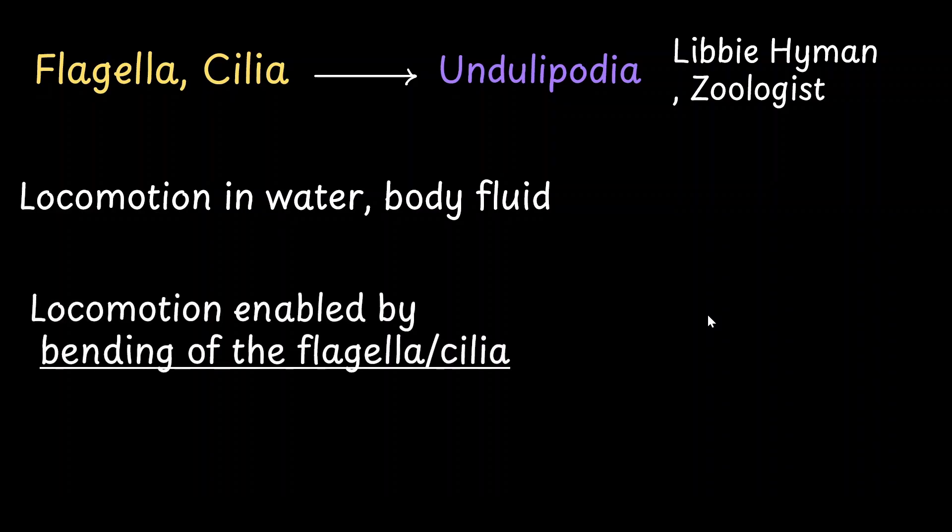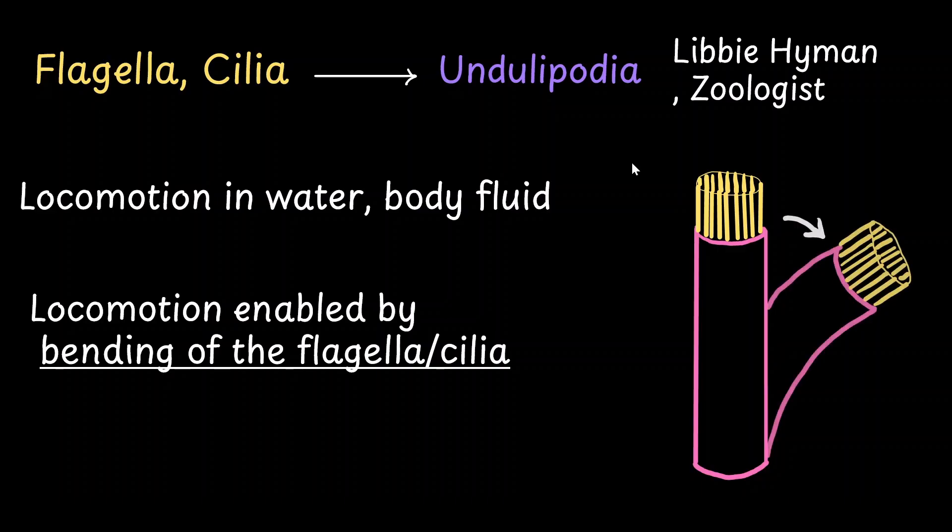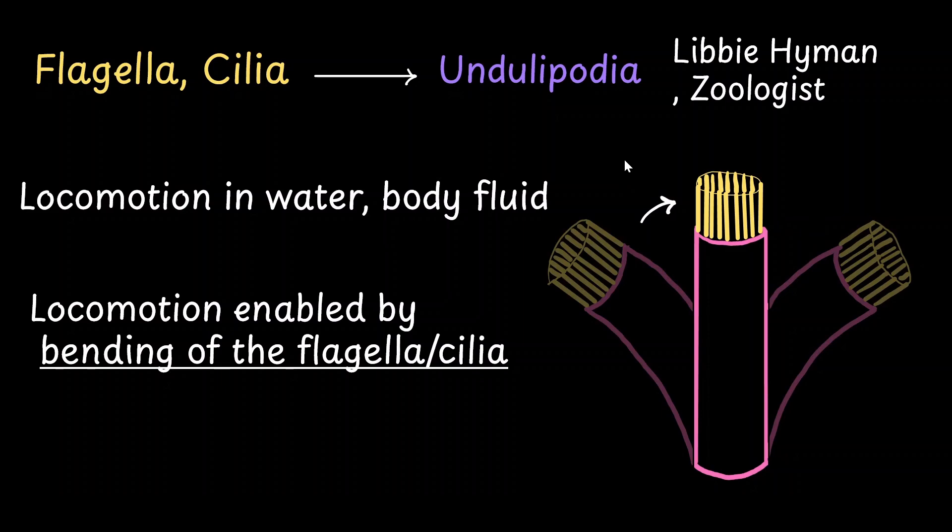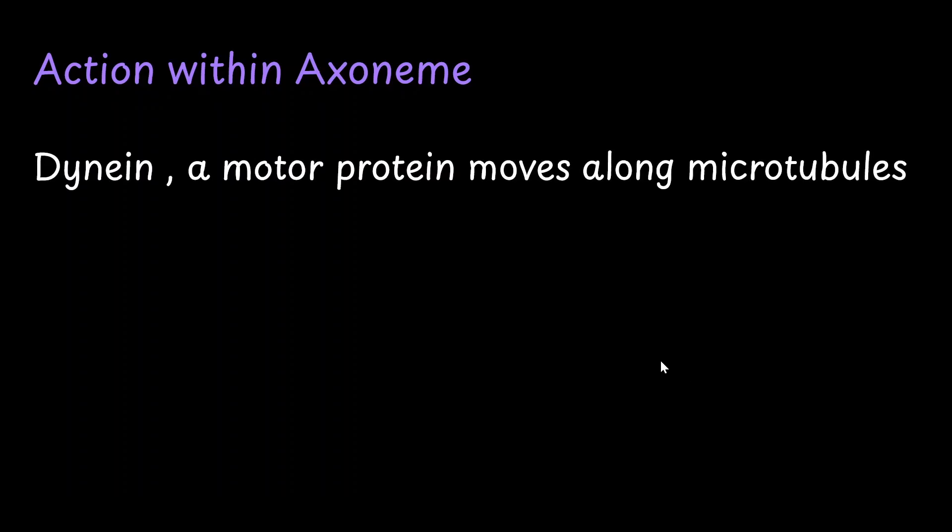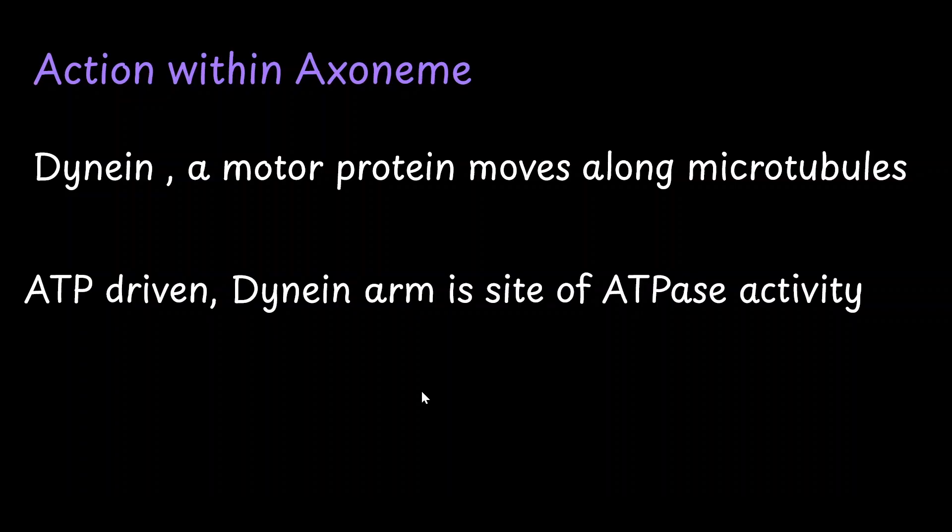The locomotion is enabled by the bending movement of the cilia or flagella. So let's say we have an axoneme this way. They are able to bend in this manner from one side to the other side and back to their original position. But to understand this bending movement, we need to look within the axoneme. We know that the axoneme consists of microtubule doublets. And there is a protein attached to it which is called dynein. It is a motor protein which moves along the microtubule. This movement is ATP driven, which means the dynein moving along the microtubule is fired by the energy from ATP.